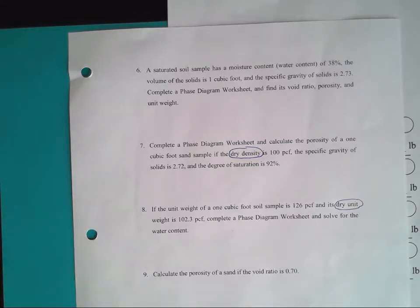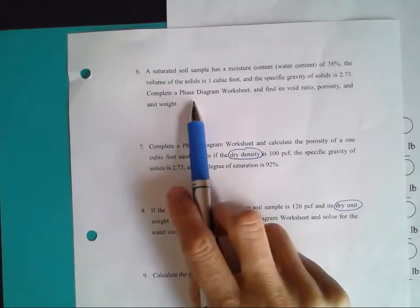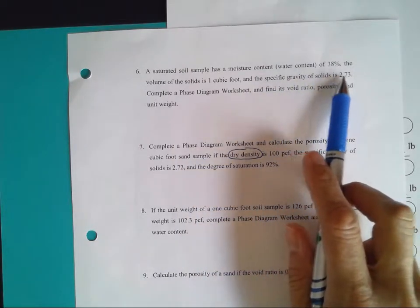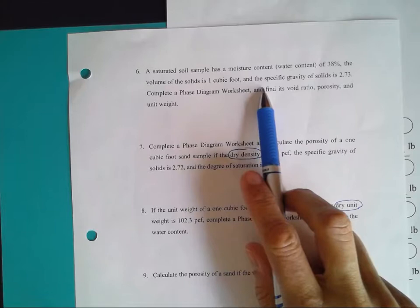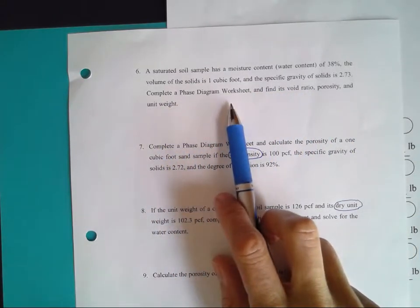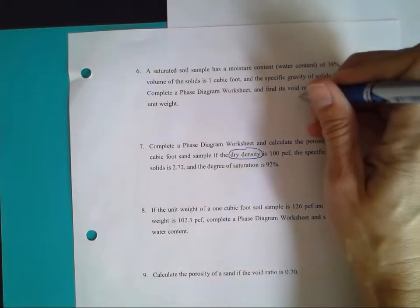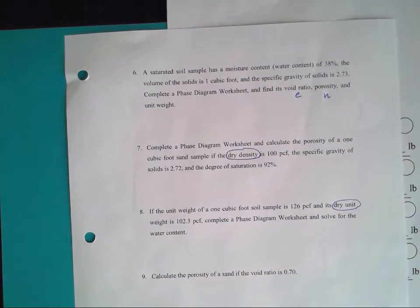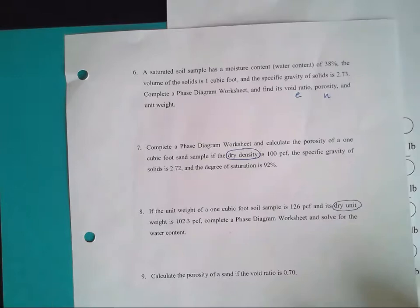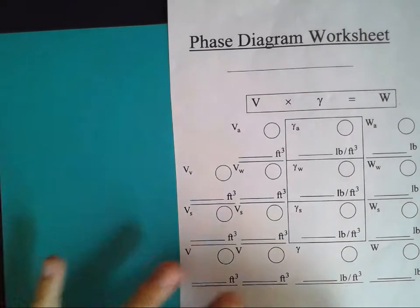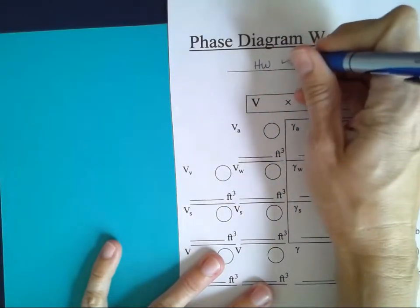We're going to continue the geotech homework solutions with problem number six. A saturated soil sample has a moisture content, or water content, of 38 percent. The volume of the solids is one cubic foot. The specific gravity of solids is 2.73. We're going to complete a phase diagram worksheet and find the void ratio E, porosity N, and the unit weight. This is homework six, chapter four, number six.